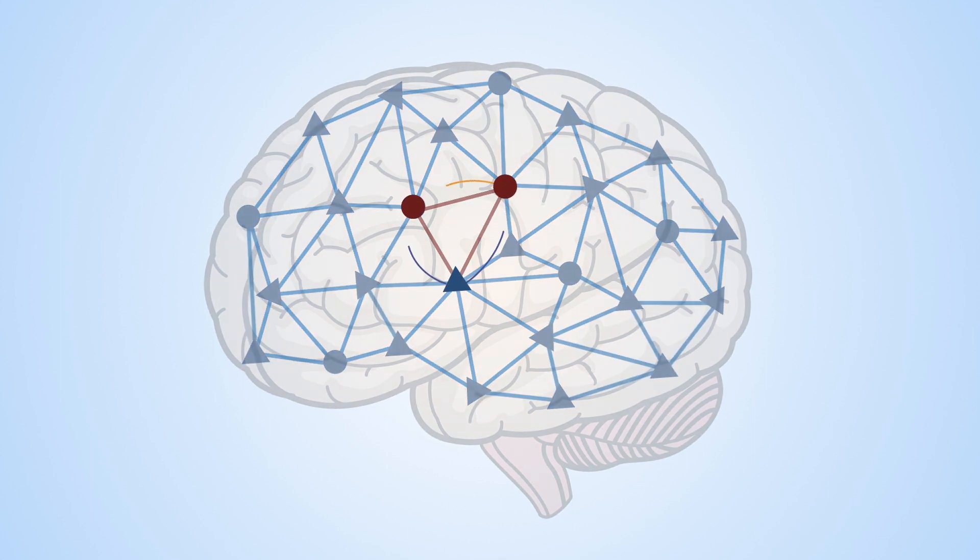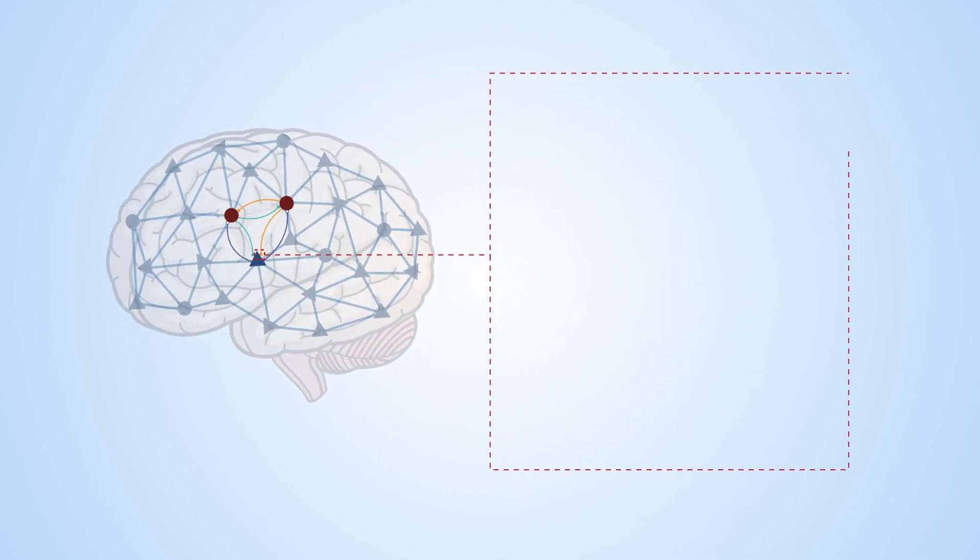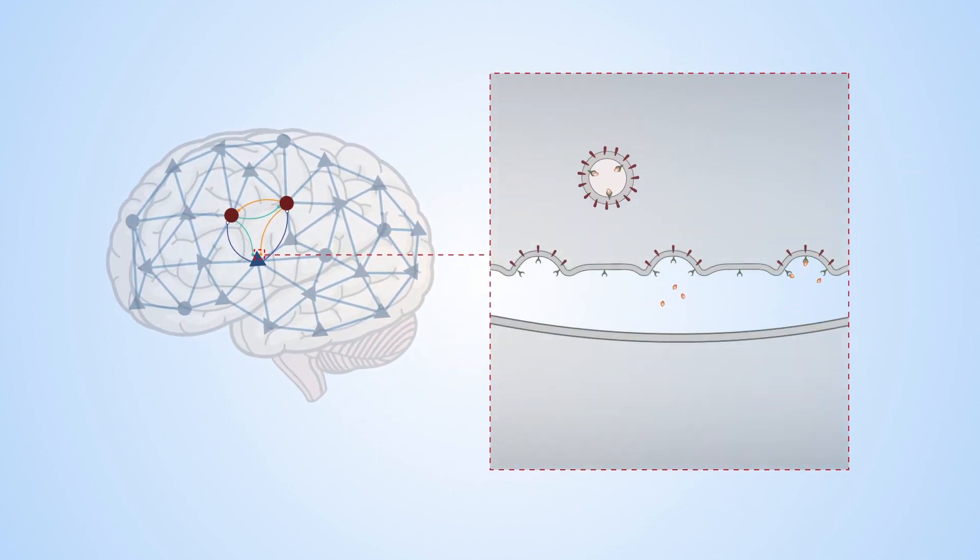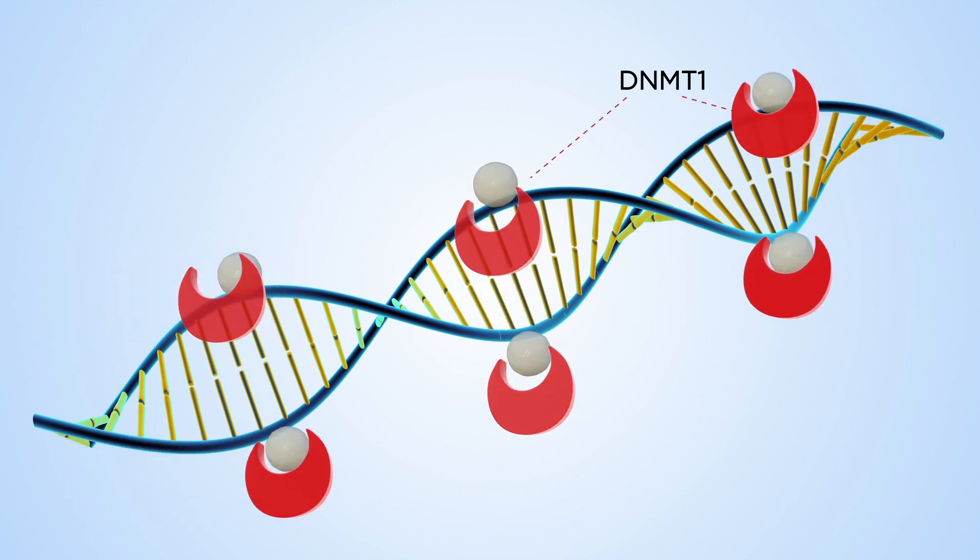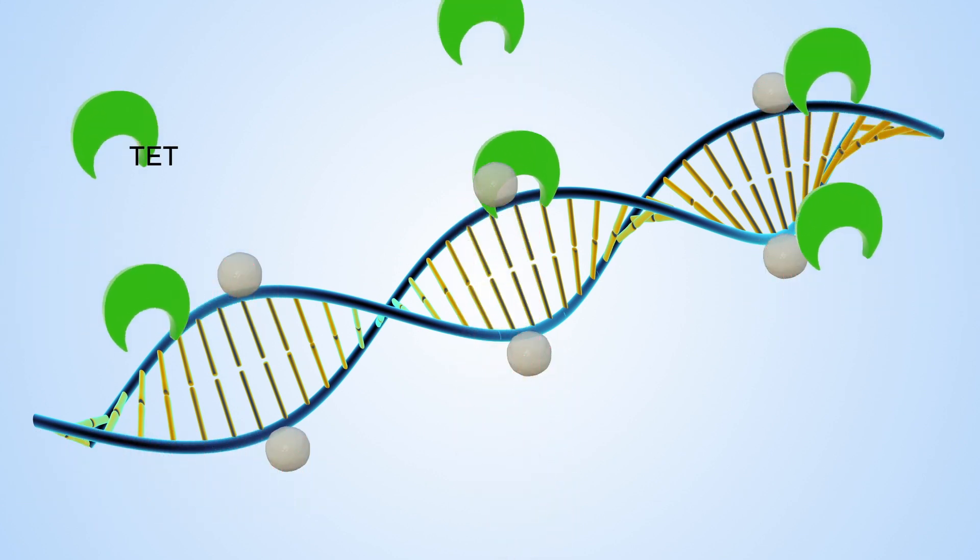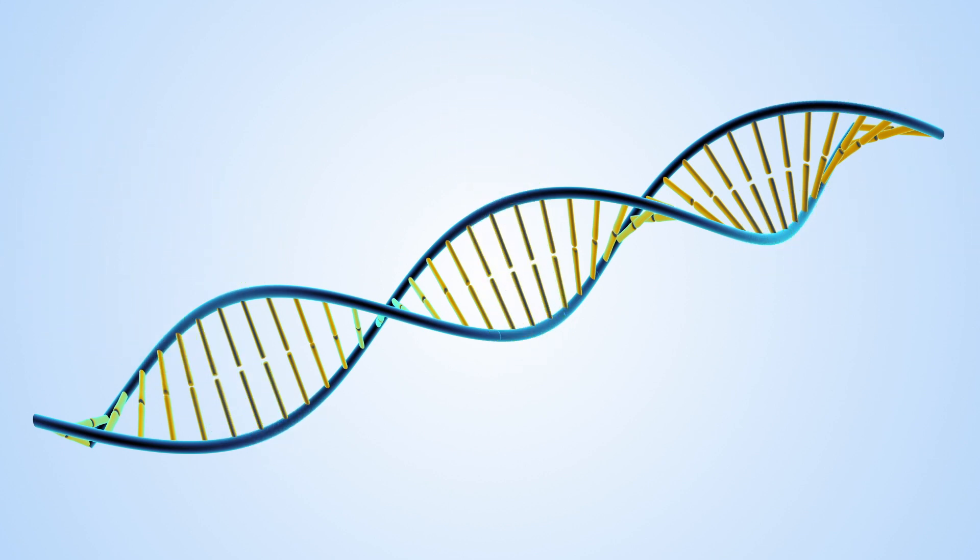Inhibitory GABAergic interneurons are critical for cortical information processing. Neuronal circuit function relies on synaptic transmission, which is facilitated by endocytosis-mediated vesicle replenishment, thereby modulating synaptic activity. DNMT1-mediated DNA methylation and TET-dependent actions involved in DNA demethylation dynamically regulate endocytosis-related gene expression.